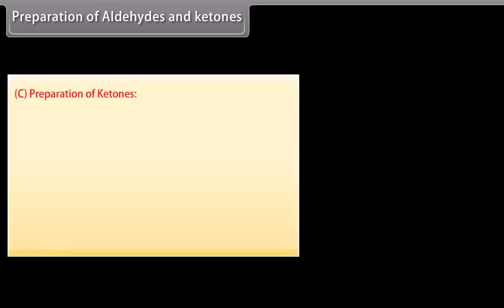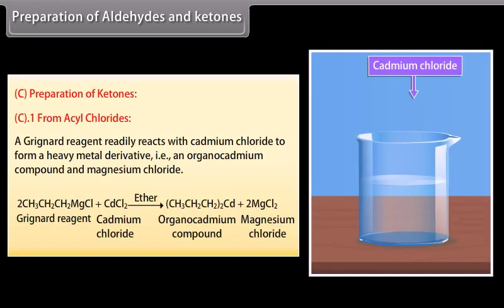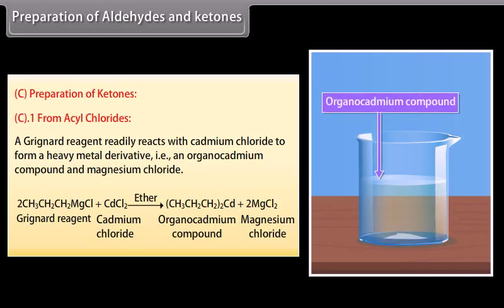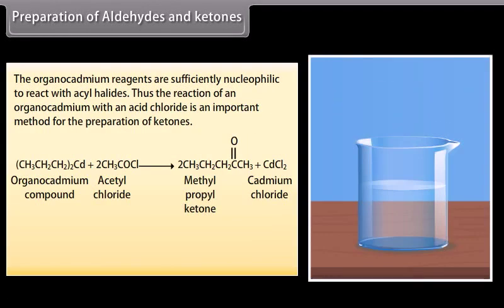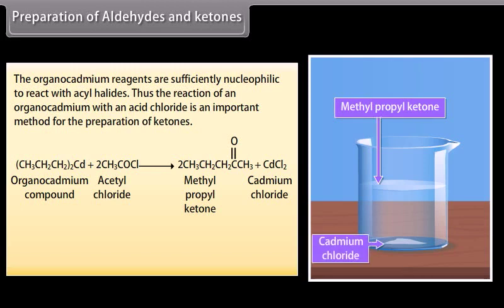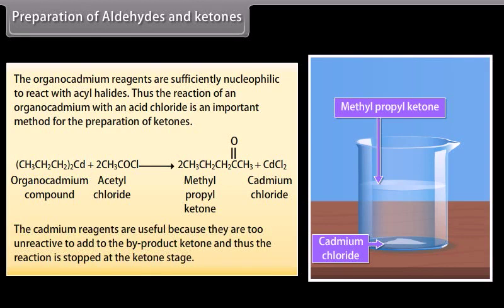Preparation of ketones — From acyl chlorides. A Grignard reagent readily reacts with cadmium chloride to form an organocadmium compound and magnesium chloride. Organocadmium reagents are sufficiently nucleophilic to react with acyl halides. The reaction of an organocadmium reagent with an acid chloride is thus an important method for the preparation of ketones. The cadmium reagents are useful because they are too unreactive to add to the ketone product, so the reaction stops at the ketone stage.